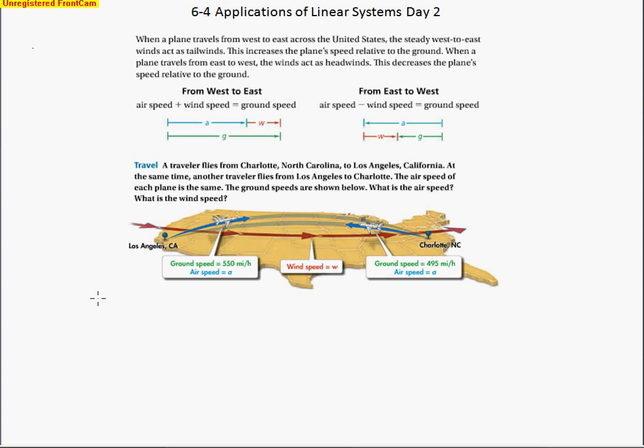So let's take a look at it. So we'll go ahead and define some variables. And they're actually already defined. We'll use what they've got. Air speed equals A. Wind speed equals W. And so we'll start off with this one here. We'll say A plus W equals 550. So I know that because it's going with the wind. You can see how the wind's pushing it at its back. It's a tailwind.